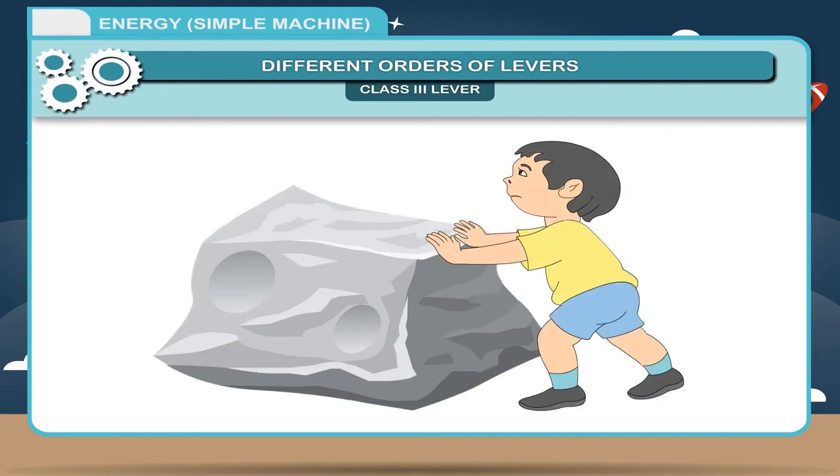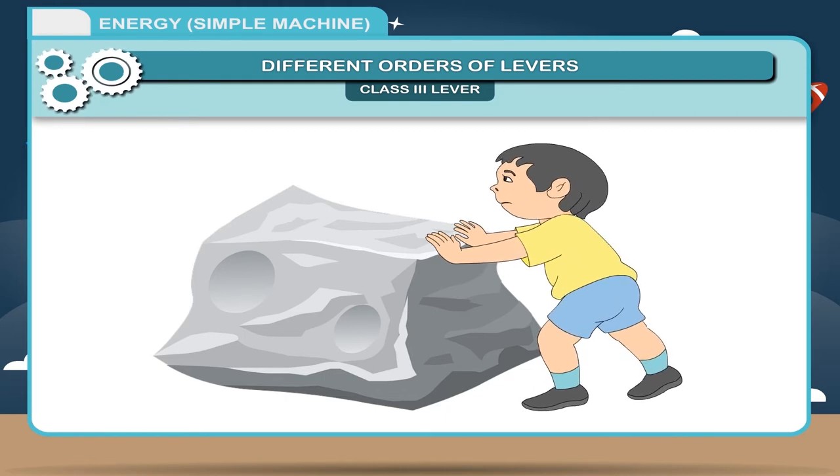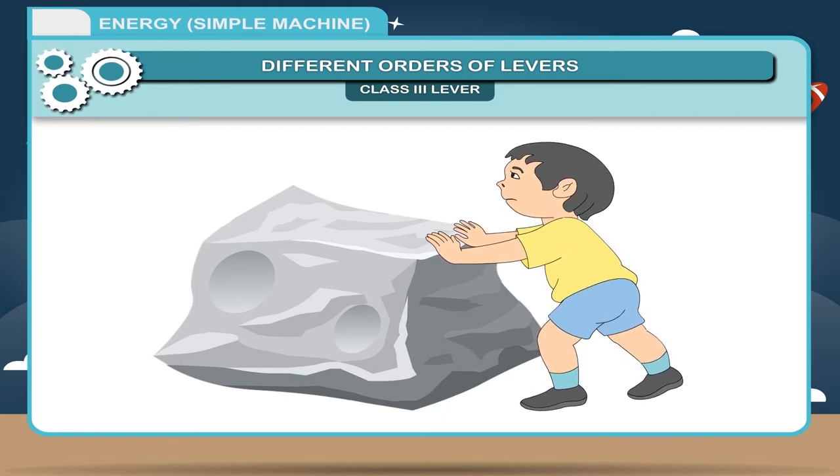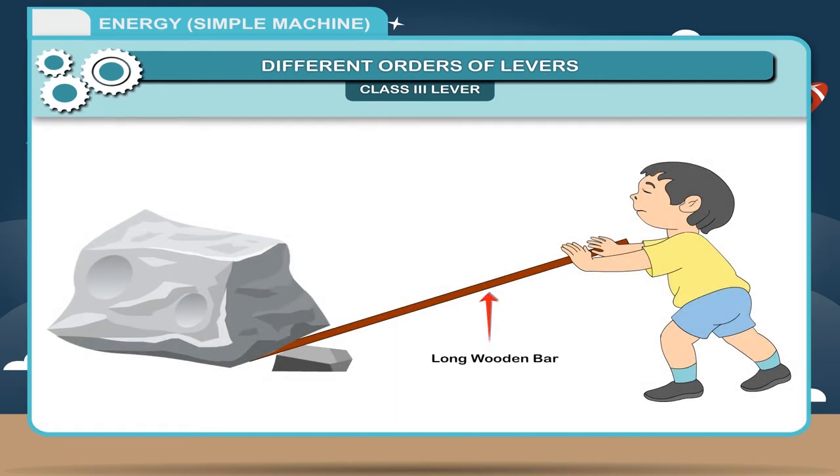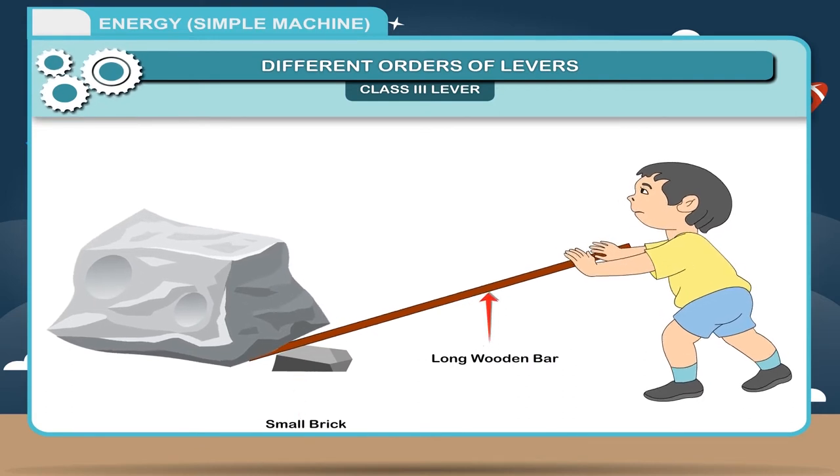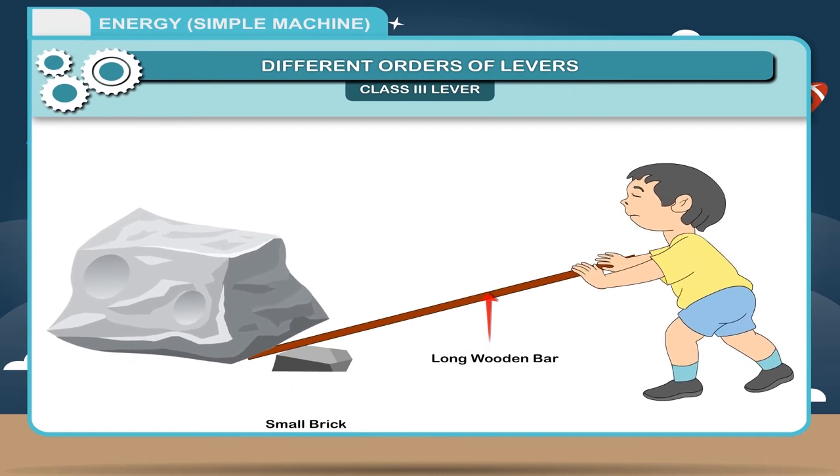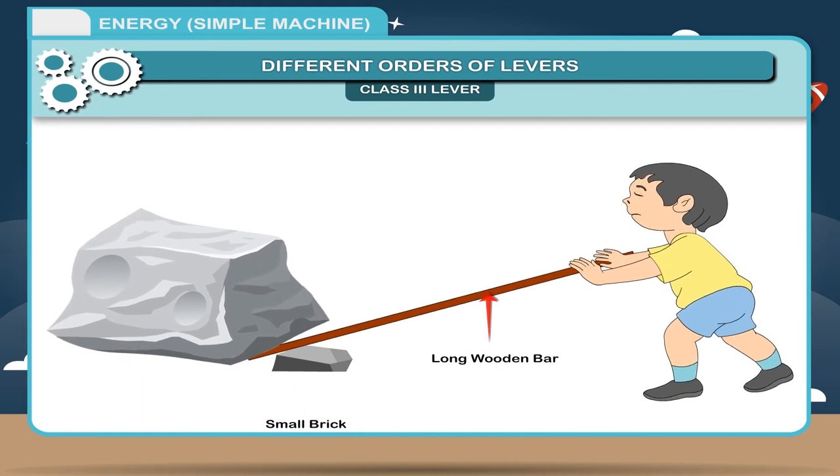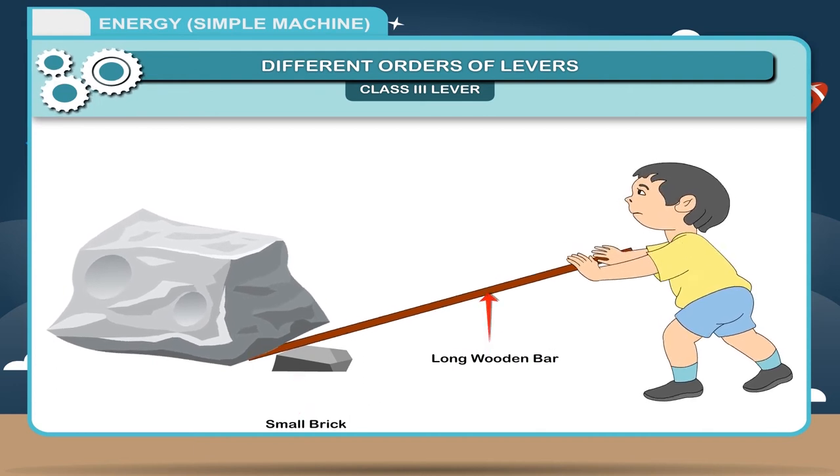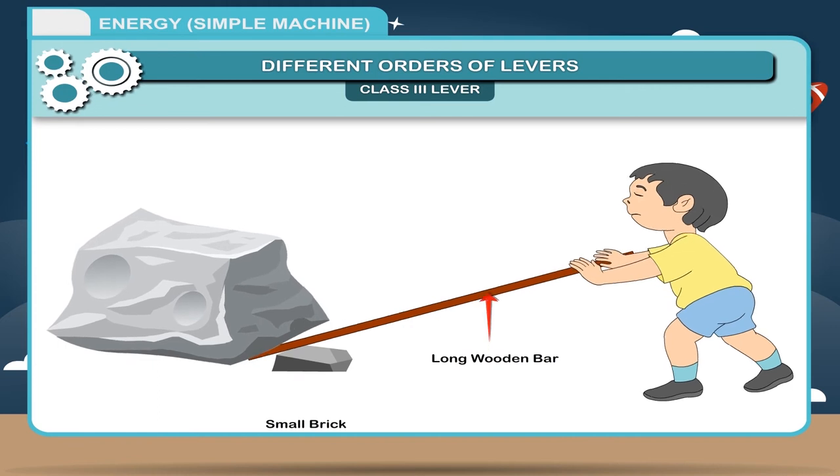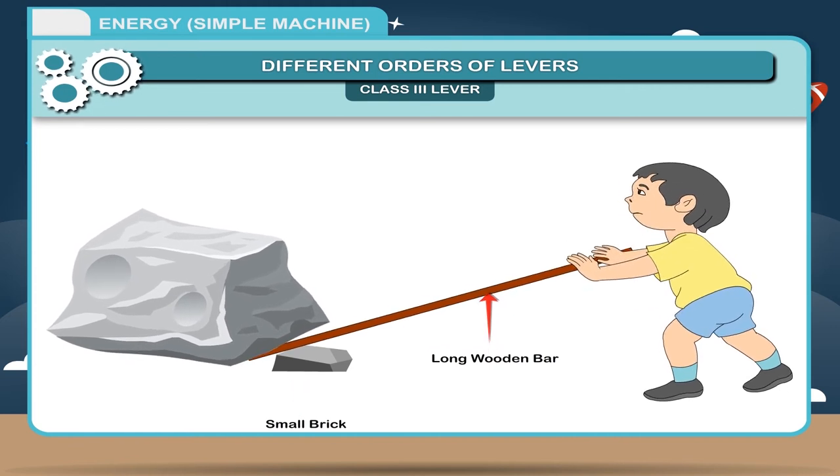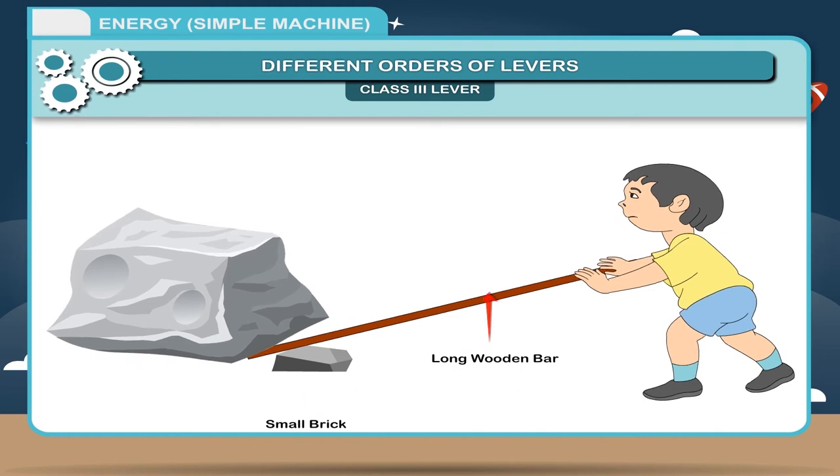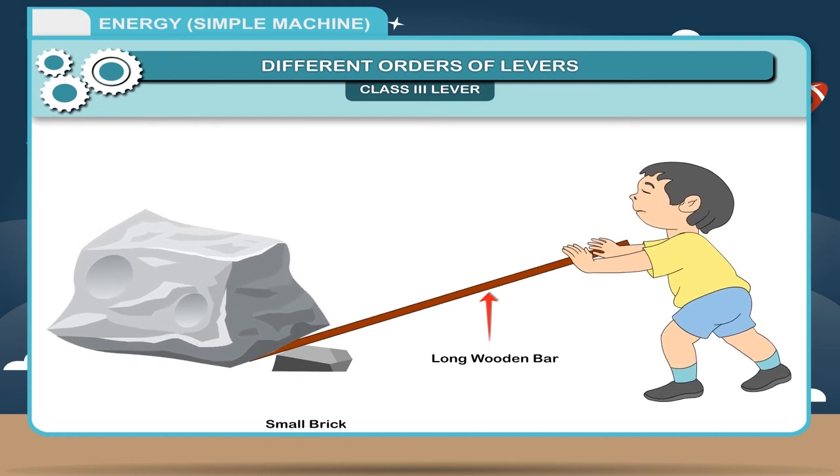Activity: Suppose you have to shift a heavy stone from its position. If you simply do it by pushing, that is by applying a force, you will observe that stone cannot be shifted easily. Take a long wooden bar and put a small brick in between the stone and yourself and apply a force as indicated in the figure. You will observe that stone can be easily shifted. From this activity, we conclude that the long wooden bar starts acting like a machine, which makes the work easier and with the application of less effort, the stone can be shifted.